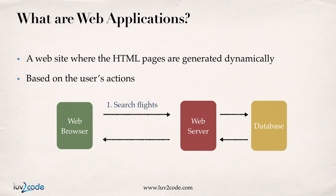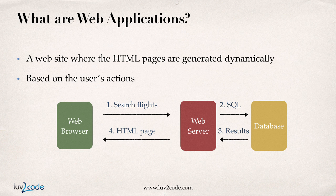You may wonder what happens behind the scenes. In the web browser, you select search flights, then it goes to the web server. The web server will actually submit a request to the database using SQL, and once it has results, it'll take that information and send back an HTML page on the fly. That's the idea of a web application, and this is very generic — you can build web apps using any type of technology such as JSP, Servlets, .NET technologies, or PHP technologies and so on.